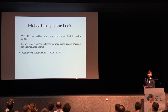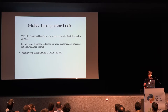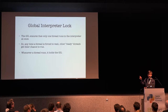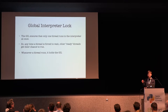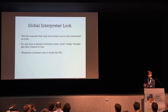Basically, GIL is nothing but a variable in Python's ceval.h. Recently Python put its source code on GitHub — it was earlier in Mercurial. You can see the file ceval.h, where it's just a simple lock variable.